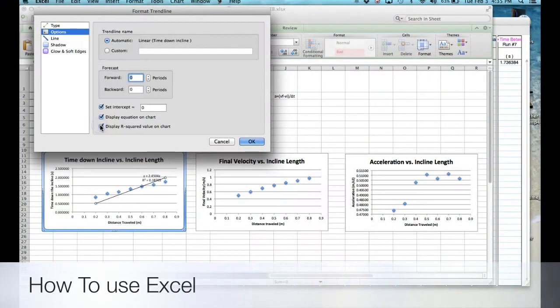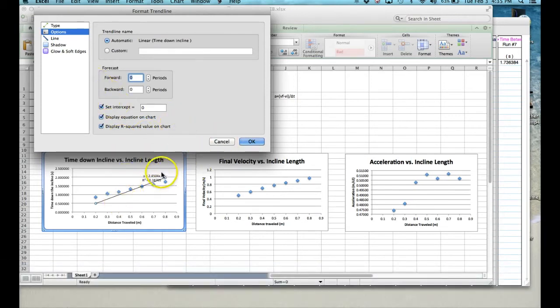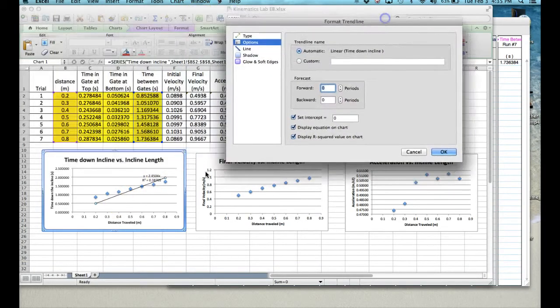And I also want you to display this R squared equation. What that will do, if you look, this R squared, is a statistical analysis that will tell you how good your results are. And the closer to 1 it is, the better. This is actually pretty poor. And that means one of two things. Either you shouldn't set the y-intercept equal to 0, or the type of graph that you've chosen is wrong.